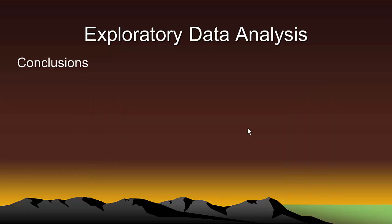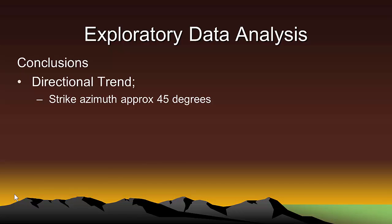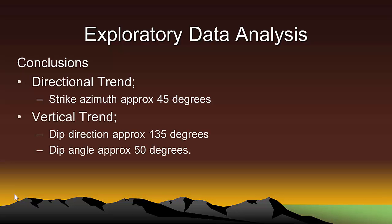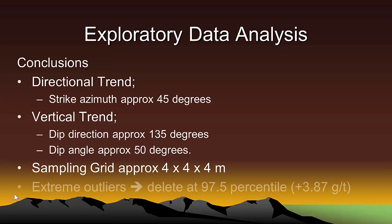So let's summarize what we have learned from our exploratory data analysis. First, the gold mineralization has a horizontal trend with a strike azimuth of approximately 45 degrees. Second, the gold mineralization also has a vertical trend with a dip direction of 135 degrees and a dip angle at approximately 50 degrees from the horizontal. We know that the nominal blast hole sample spacing is 4 by 4 by 4 meters. And finally, all blast hole grades equal to or above 3.87 grams per ton are considered to be outliers and they will be deleted from all future variogram calculations.